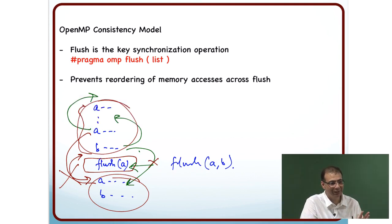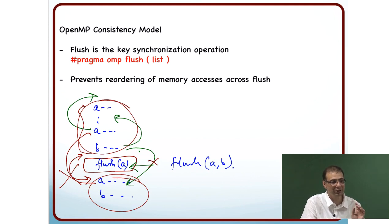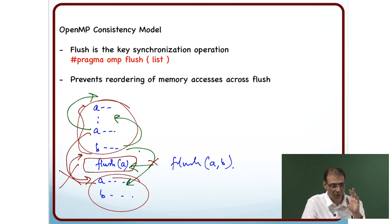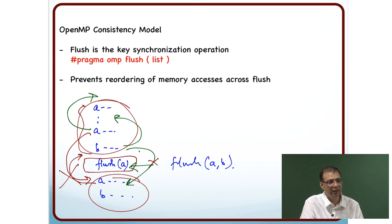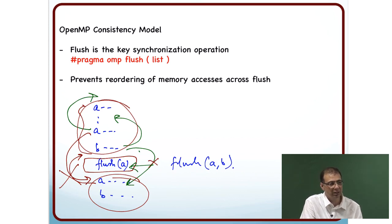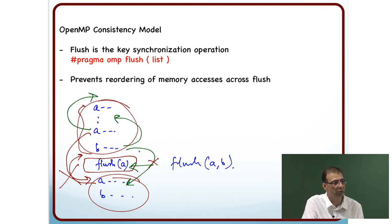There are many other things the compiler must consider before moving any instruction around — dependencies and a whole lot of other factors. We are just saying that if the compiler wants to move an instruction around, is it allowed to or not. The flush instruction says no, you are not allowed to move it around.